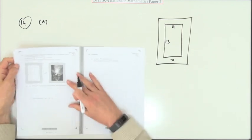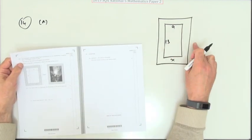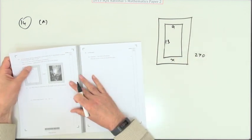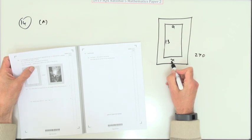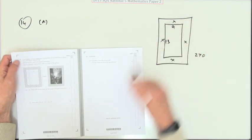14. Last question. A rectangular picture is mounted on a rectangular card. The area of the card is 270 square centimetres. A border of X centimetres wide on all sides. So that's X. That's X. That's X. And that's X.